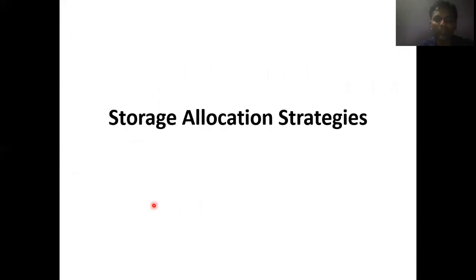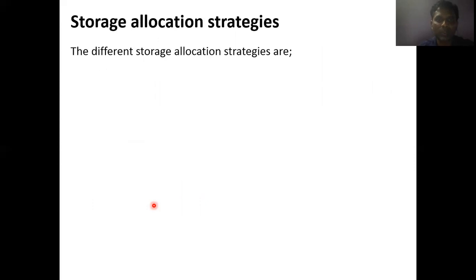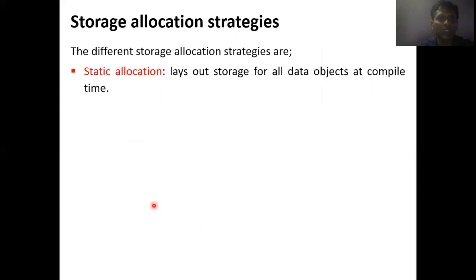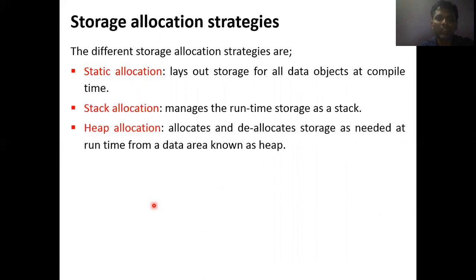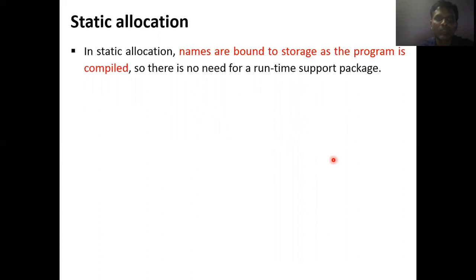Now we are defining how we perform actual storage allocation. There are three different methods for storage allocation strategy. One is static allocation — the layout of storage for all data is already known at compile time. Second is stack allocation — that is runtime storage management. Third is heap allocation — which allocates memory like the malloc and free functions in C.